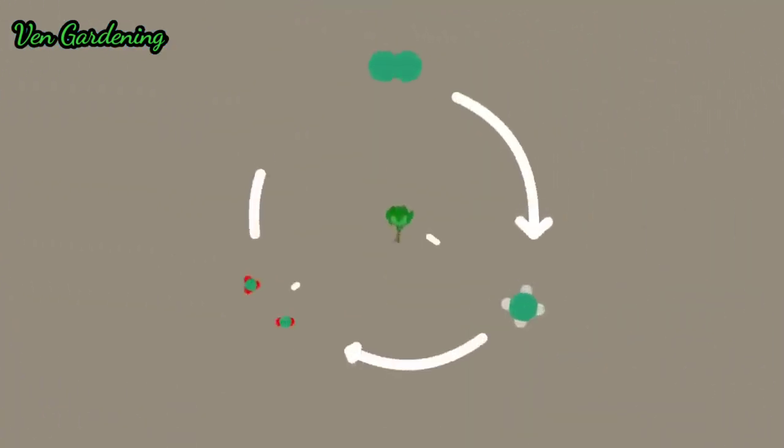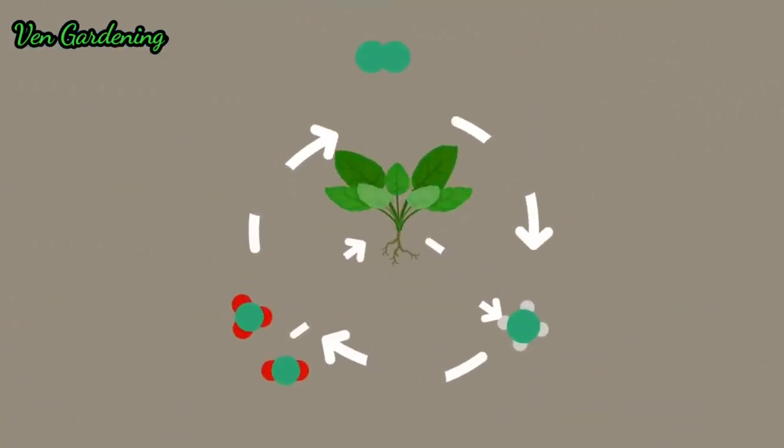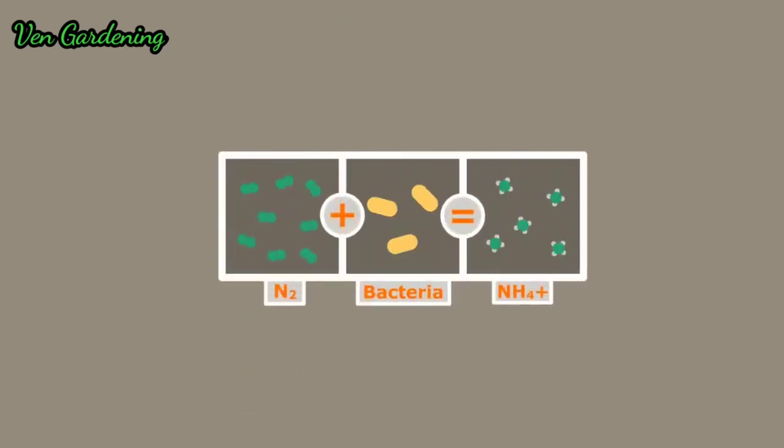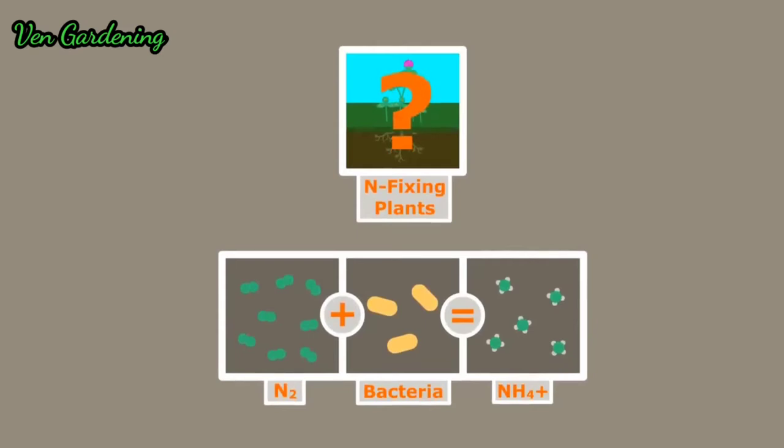Okay, so we know that the nitrogen cycle depends heavily on life in the soil. Without them, the plants would be quite sad. But you may have noticed, if the fixation process is done by bacteria, where do nitrogen-fixing plants fit into this?